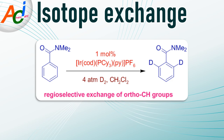In this case, the proteo hydrogens at the ortho positions are replaced by deuterium atoms. Recall that deuterium is an isotope of hydrogen.